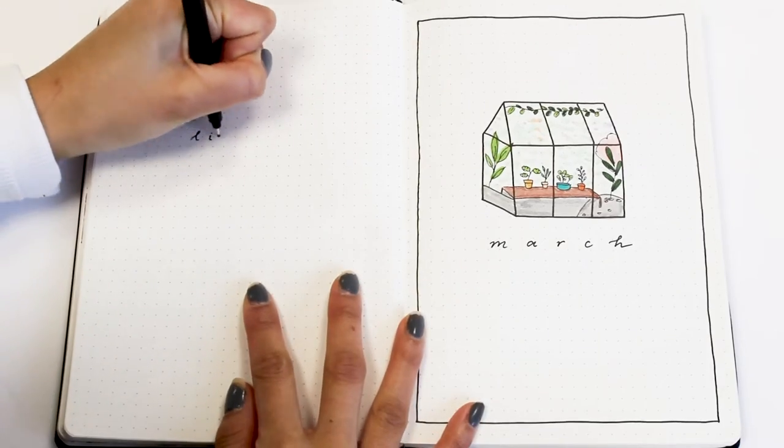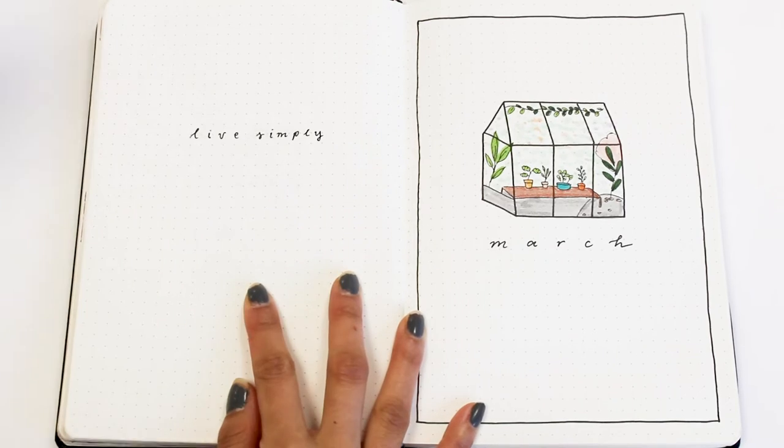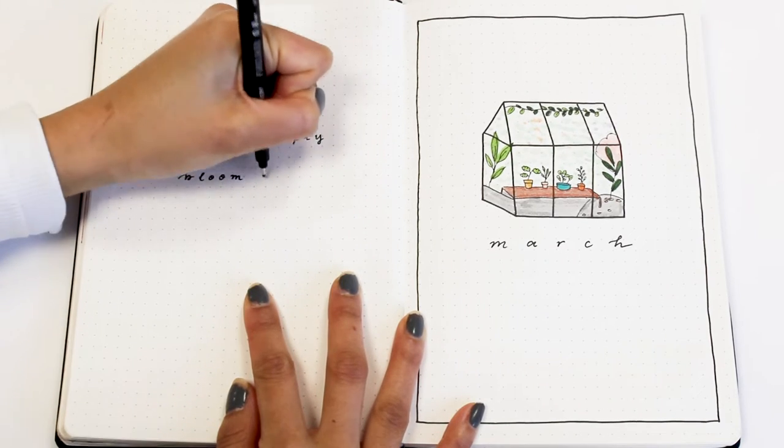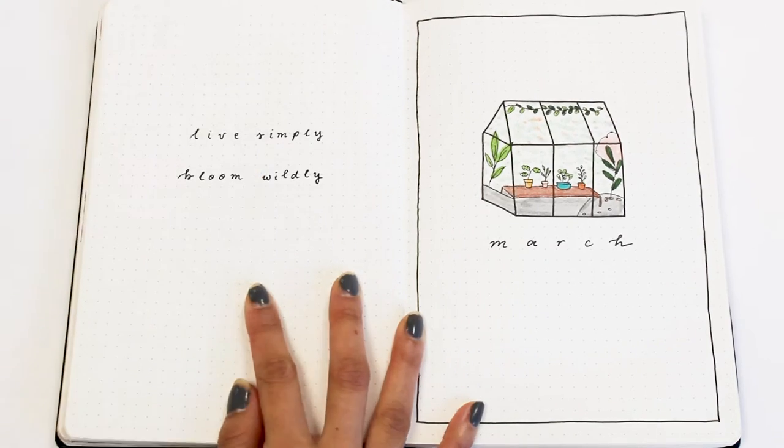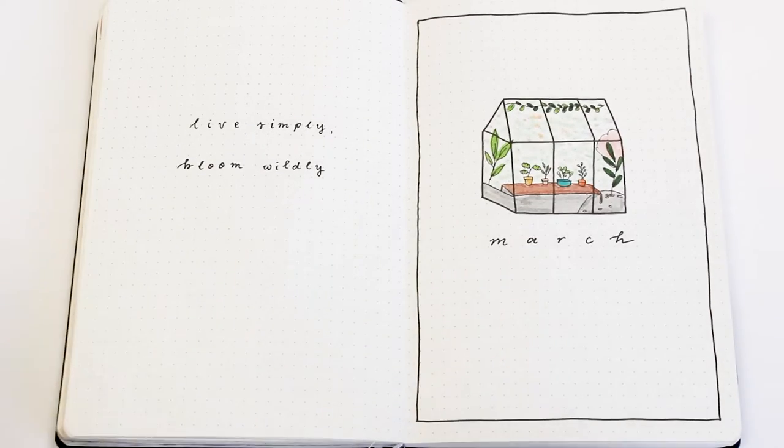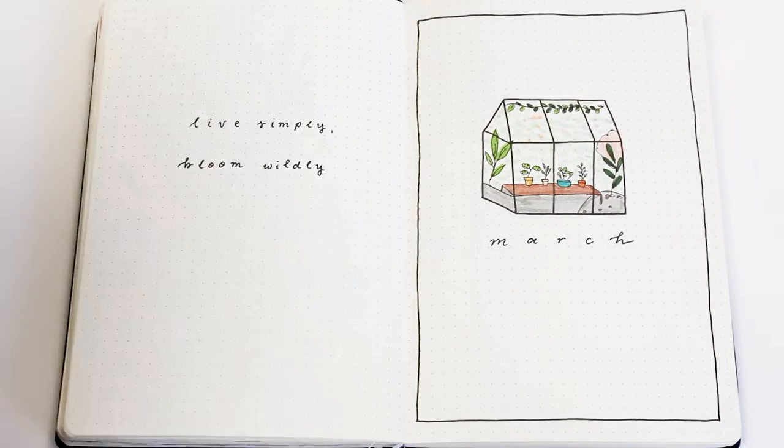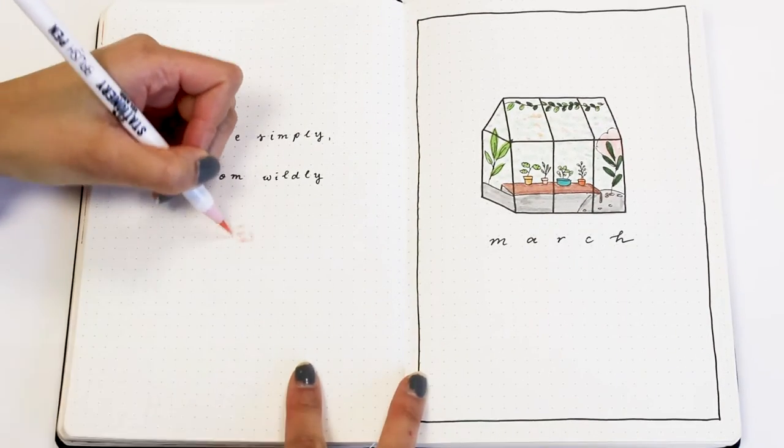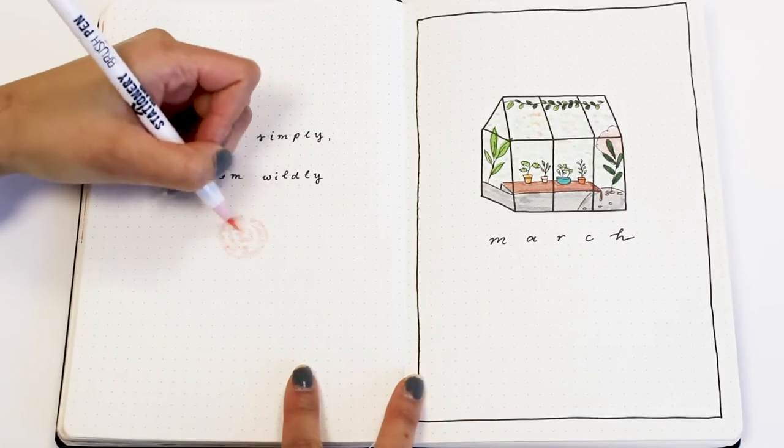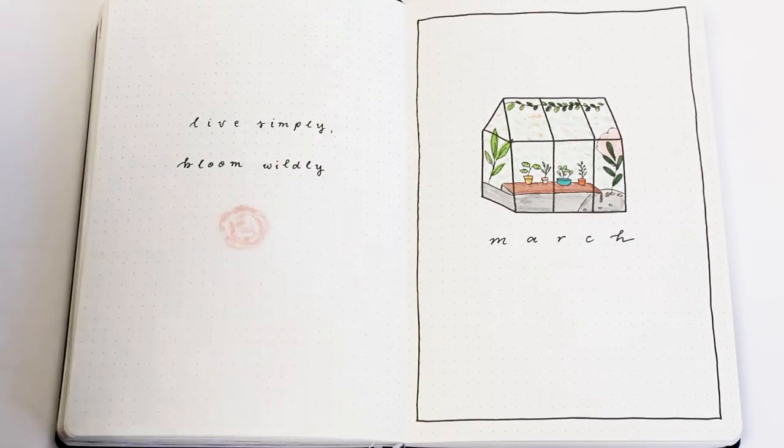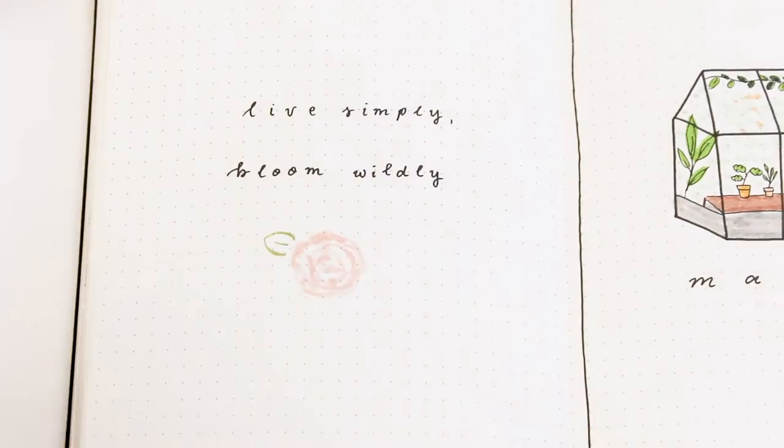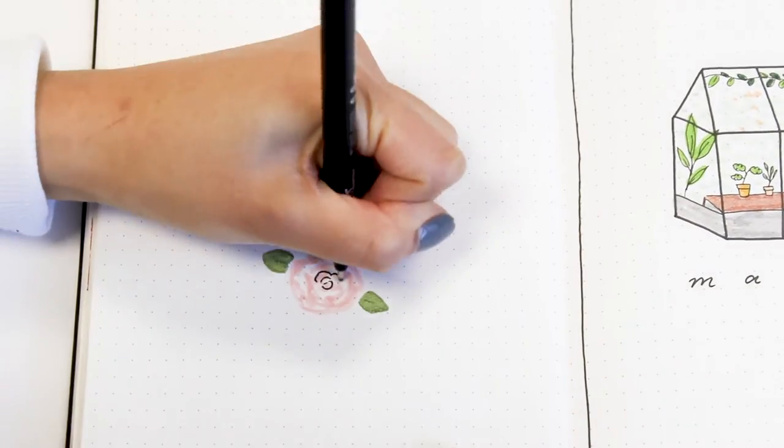On the other side, as usual, I have my little quote page. Because I wanted to take it easy this month I decided to go for a short and sweet quote that says 'live simply bloom wildly,' which I think is nice because it's a reminder to lead a simple lifestyle but still thrive. Again I used this simple lettering and then I added a cute little rose drawing.